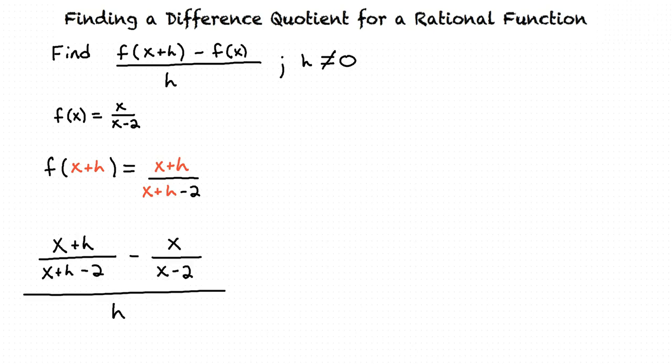We can substitute f of x plus h and f of x into the difference quotient, and this results in the following expression. We need to simplify the numerator, but we cannot do this unless the fractions have common denominators. How do we do this?